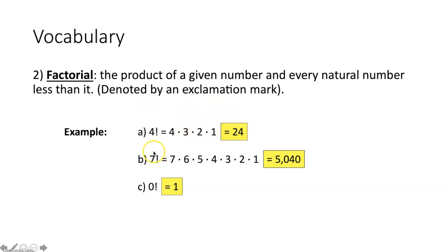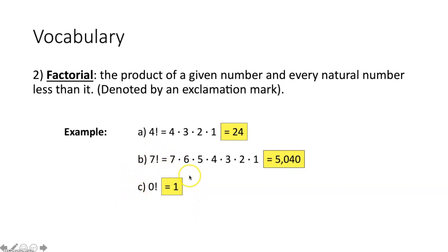Seven factorial means seven times six times five times four times three times two times one, which gives you 5,040. The only special case is zero factorial — you just need to memorize that zero factorial equals one.